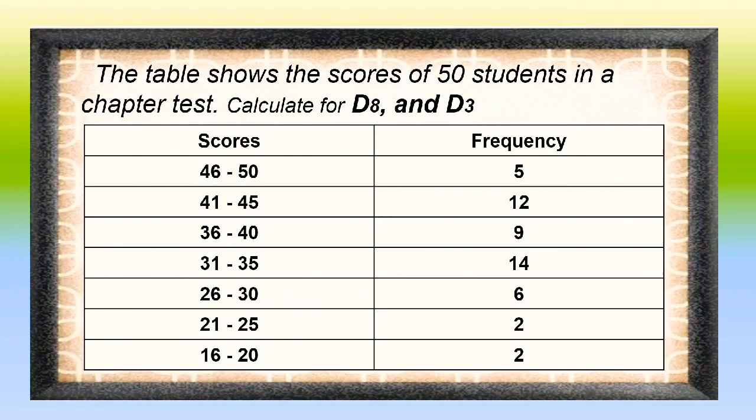Let us take a look at this example. The table shows the scores of 50 students in a chapter test. Calculate for D sub 8 and D sub 3. In our table, it shows the scores in different class intervals and their corresponding frequencies.